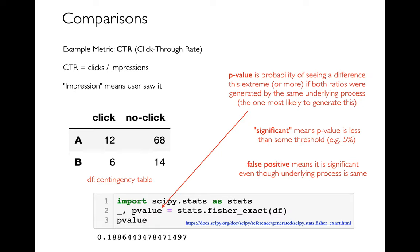The p-value is the probability that I would see a difference this extreme if the underlying process for A and B is actually the same. So if A and B are the same but I collect enough samples, eventually I might get a result this extreme — and this p-value says that would happen about 19% of the time. In statistics we set a significance threshold, like 5%. If the p-value is less than 5% we consider it significant. This result at 19% would not be significant. Even though version B had double the click-through rate, the sample was too small.